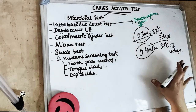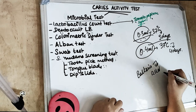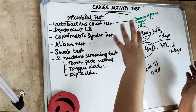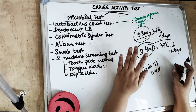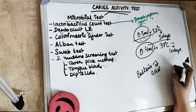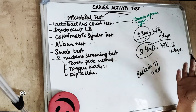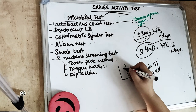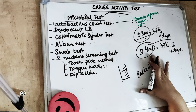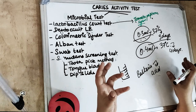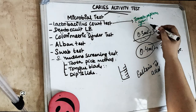For the lactobacillus count test, we shake the collected sample to break up bacterial aggregates. Then we add buffer solution — dilutions of 10⁻² and 10⁻³ — mixed with 10 ml of melted agar. These plates are incubated for 4 days. The lactobacillus colonies appear as white dots on the medium. We count these colonies to evaluate the result.